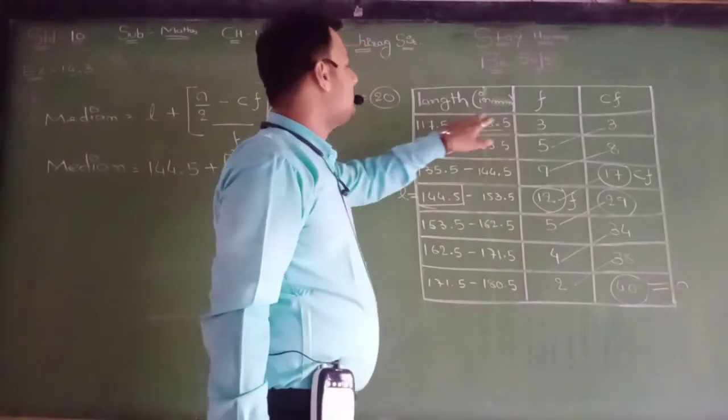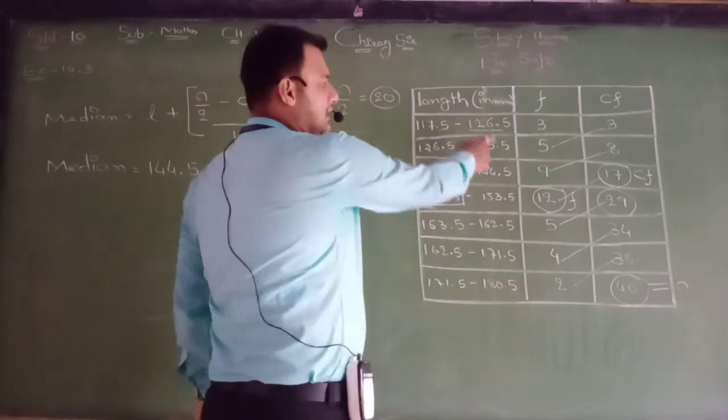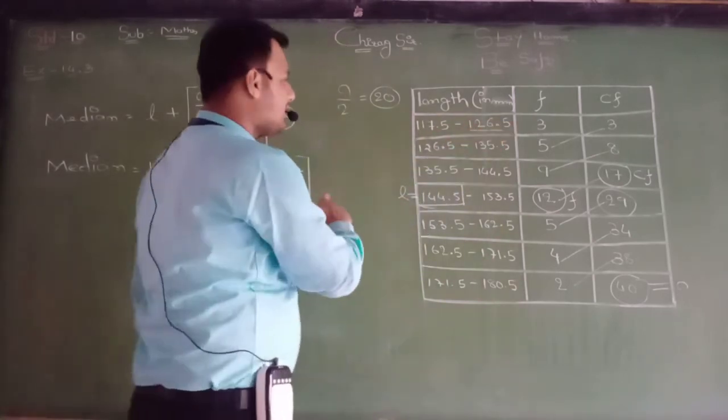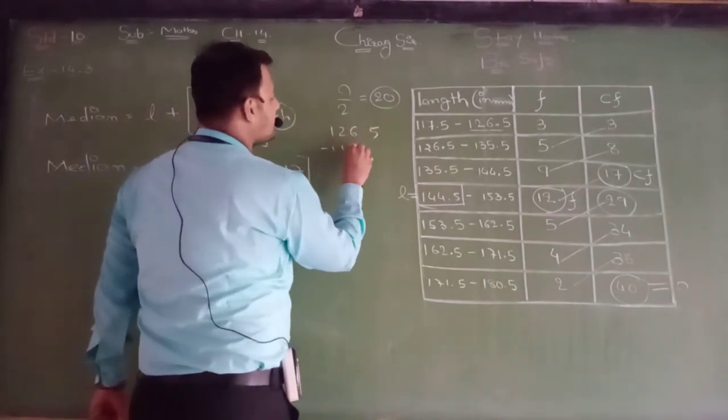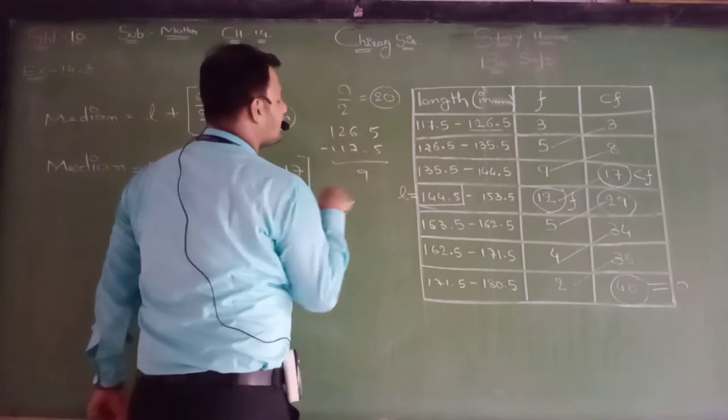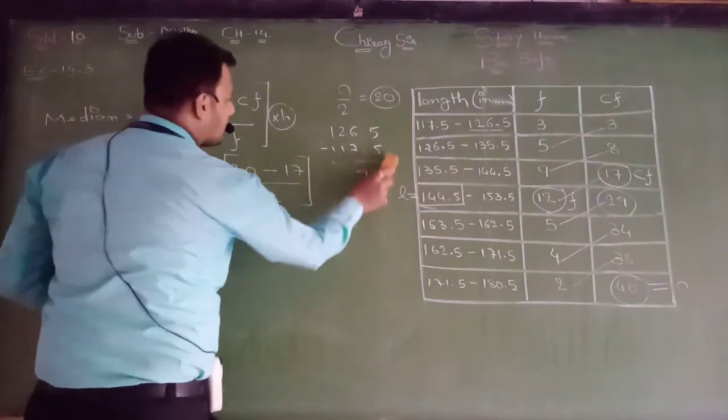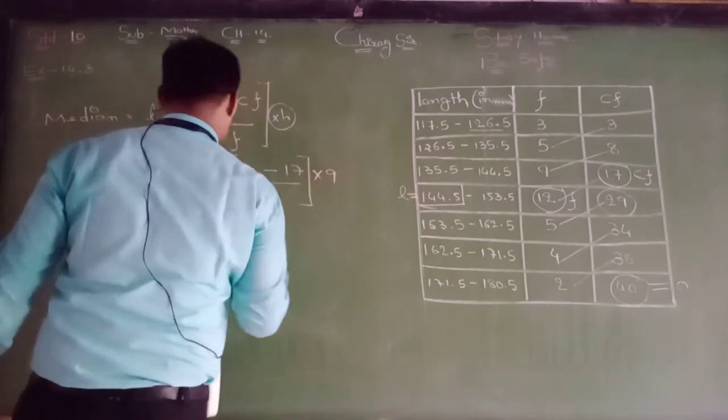126.5 minus 117.5. In short, 126.5 minus 117.5, if you do it, the answer is 9. It means here it is 9.